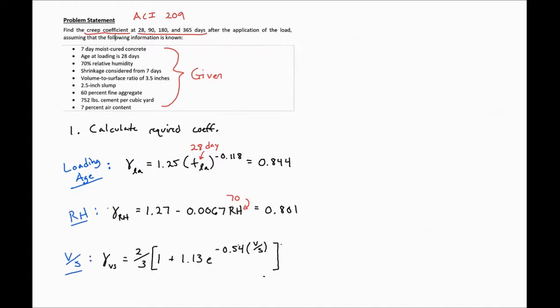Our next factor is our volume to surface area ratio factor. In our case, we have a volume to surface area ratio of 3 inches. So we plug that into our equation here, and we'll find our factor to be 0.780.